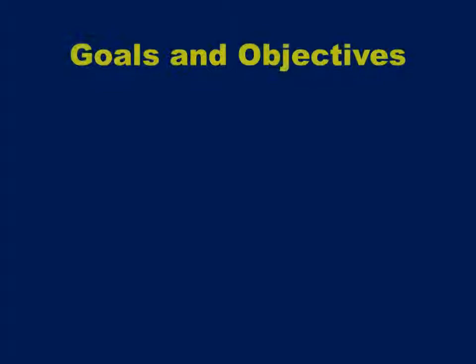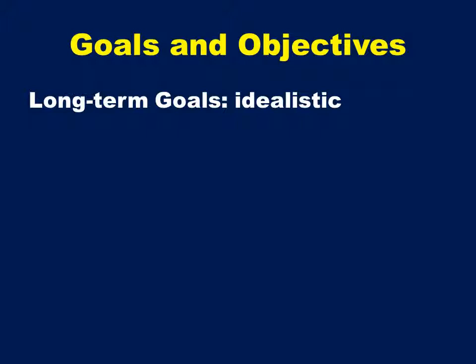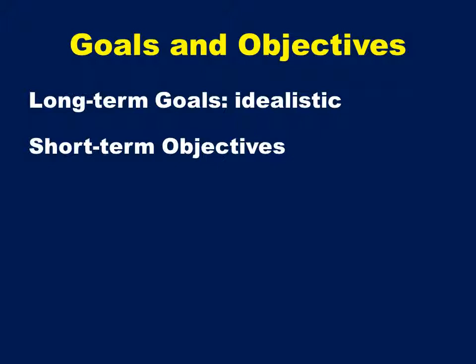Goals deal with the long-term expectations of the future of the organization. Objectives are short-term mileposts on the way to achieving the long-term goals. Objectives must have three characteristics. First, objectives must be relevant to achieving the goals.